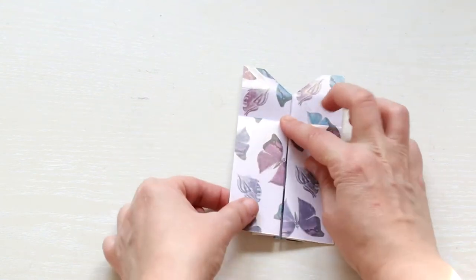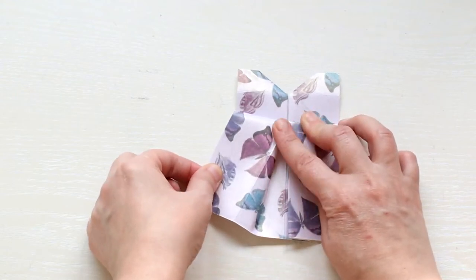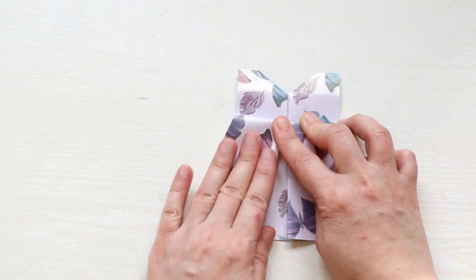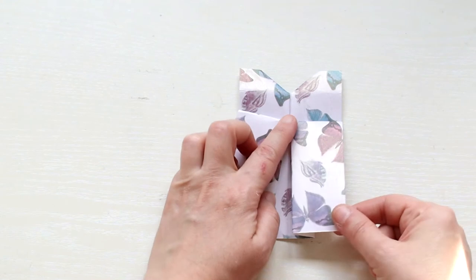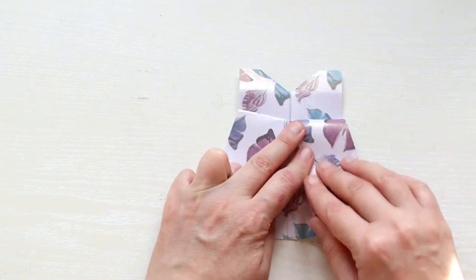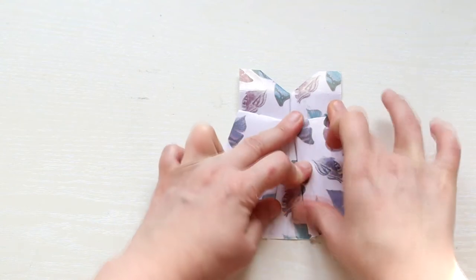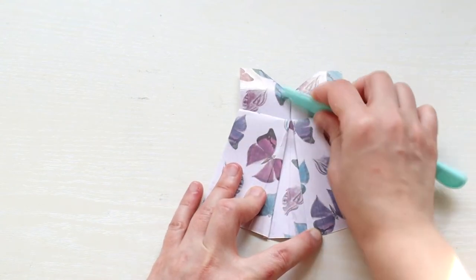Now pull the bottom corners outward as far as they go and crease to form the skirt. Use a bone folder to burnish the folds.